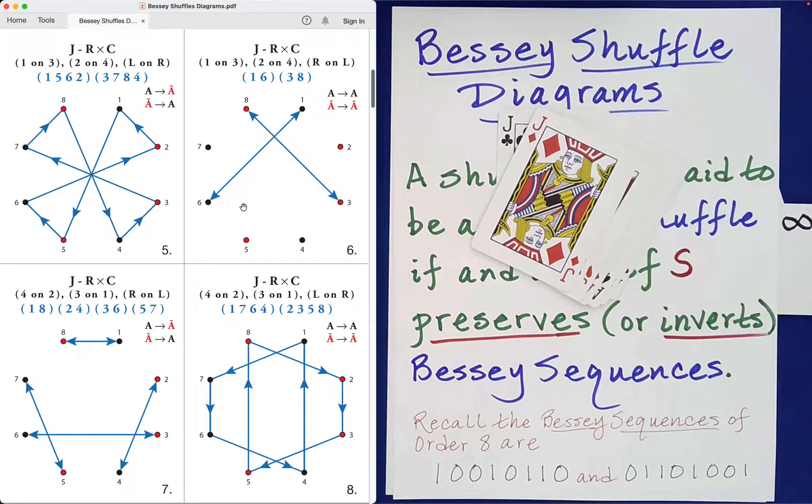We'll be looking at these four shuffles and the effect that they have on a packet of eight cards and whether they preserve Bessie sequences or invert them. And ways in which you can use your understanding of all of this to design fun and engaging card effects. So thank you for watching.